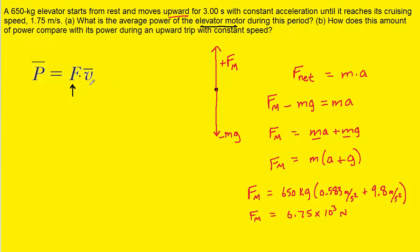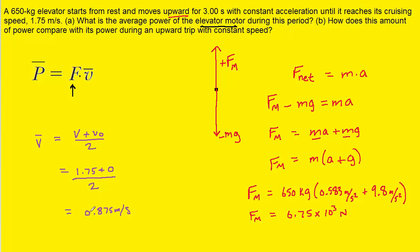Next, we need to find the average velocity. Average velocity equals the final velocity plus the initial velocity divided by 2. Taking 1.75 m/s plus 0, divided by 2, gives us 0.875 meters per second for the average velocity.